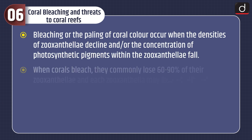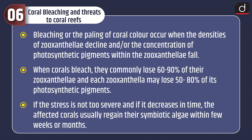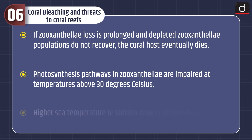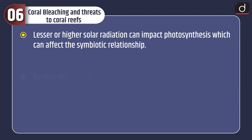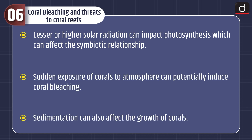Coral bleaching and threats to coral reefs. Bleaching or the paling of coral color occurs when the densities of zooxanthellae decline and/or the concentration of photosynthetic pigments within the zooxanthellae falls. When corals bleach, they commonly lose 60–90% of their zooxanthellae, and each zooxanthella may lose 50–80% of its photosynthetic pigments. If the stress is not too severe and decreases in time, the affected corals usually regain their symbiotic algae within a few weeks or months. If zooxanthellae loss is prolonged and depleted populations do not recover, the coral host eventually dies. Photosynthesis pathways in zooxanthellae are impaired at temperatures above 30°C. Higher sea temperature or a sudden drop in temperature can cause heavy bleaching. Lesser or higher solar radiation can impact photosynthesis, affecting the symbiotic relationship. Sudden exposure of coral to the atmosphere can potentially induce coral bleaching.